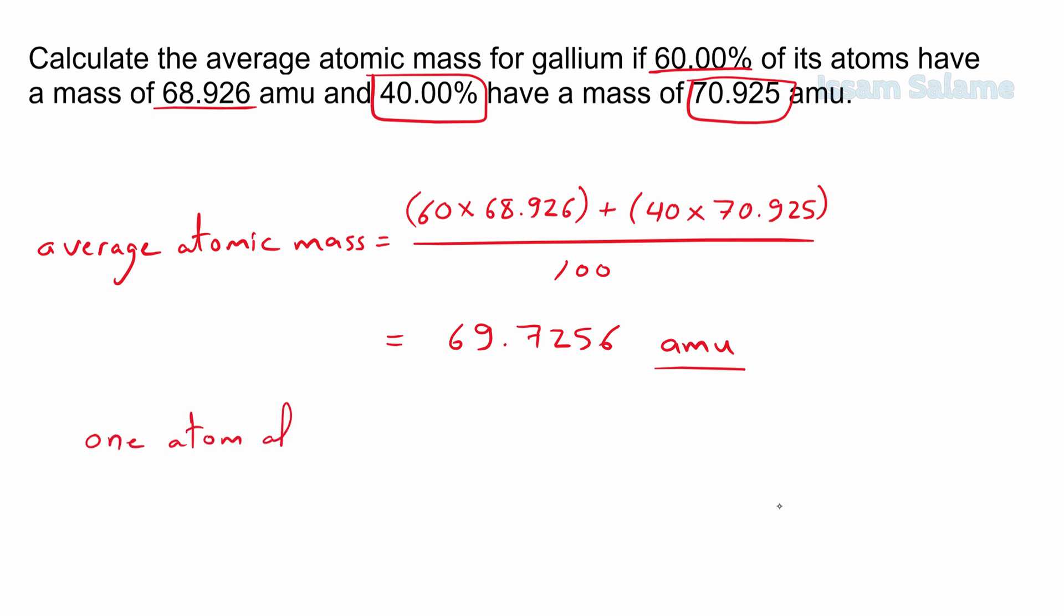Now, one thing to mention before I move to another example, is that the mass of one atom of gallium is going to be 69.7256 amu, while the mass of one mole of gallium is going to be 69.7256 grams. So we use the same number, but with different units.